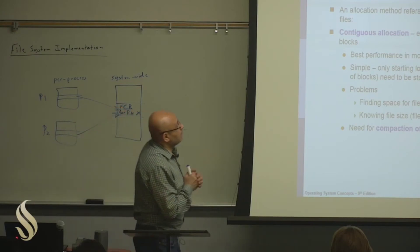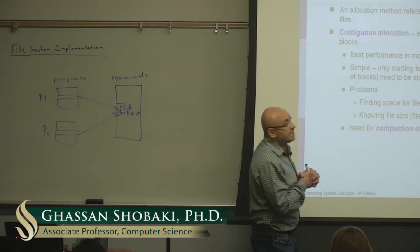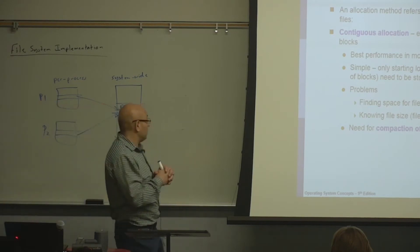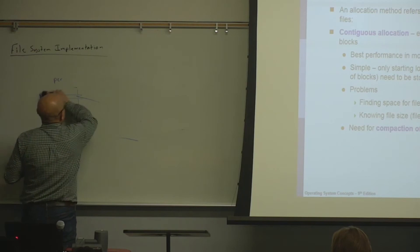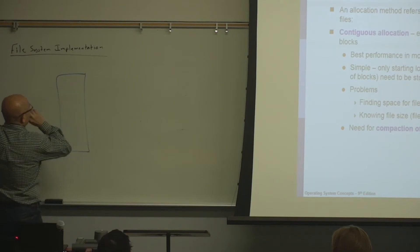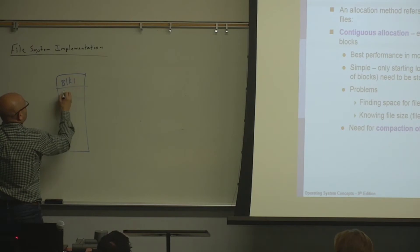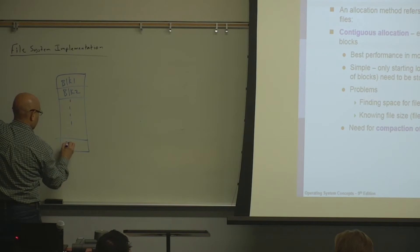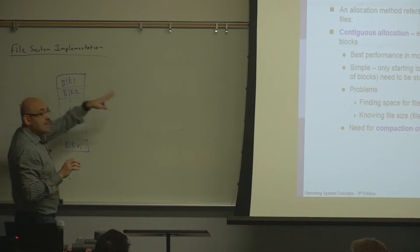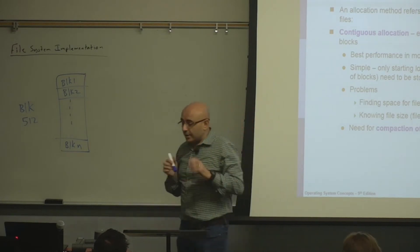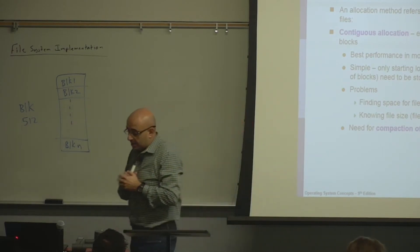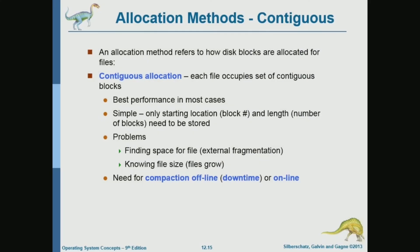Now we talk about the important topic of the different allocation schemes. What do we mean by allocation schemes? We mean how do we allocate blocks for a file. A file consists of many blocks — block one, block two, through block N — and each block is 512 bytes. We will face some of the same problems that we faced in memory management, and many of the concepts are the same.